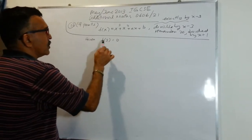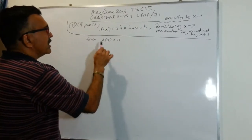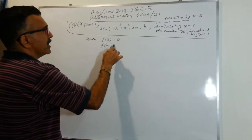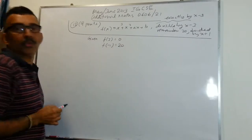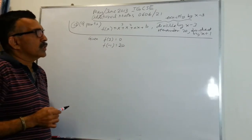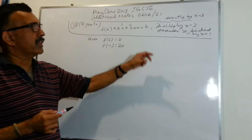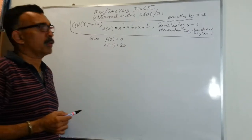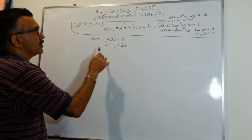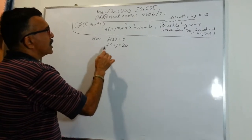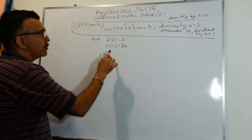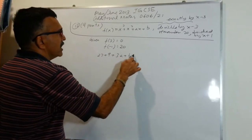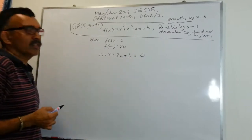So f(3) = 0, and we are also given a remainder of 20 when divided by x plus 1, which means f(−1) = 20. We summarize the information in this form and set up equations. For f(3) = 0, we write: 3³ + 3² + 3a + b = 0, which gives 27 + 9 + 3a + b = 0.